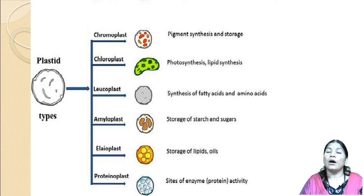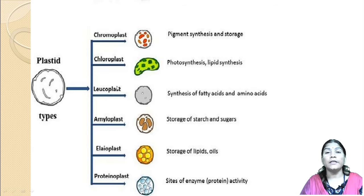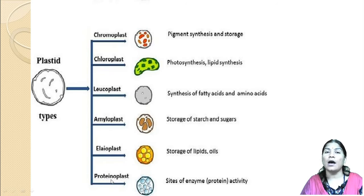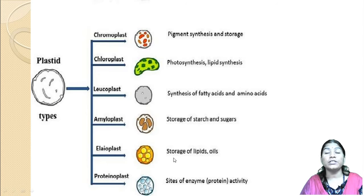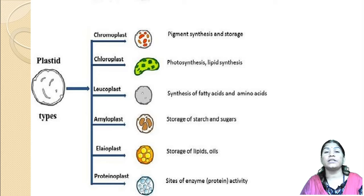Classifying on the basis of whether pigment is present or absent, there are two categories. The first category includes plastids which have different pigments. The second category includes pigment-free plastids — leukoplasts, amyloplasts, elaioplasts, and proteinoplasts. Amyloplasts play an important role in the storage of starch and sugar molecules. Elaioplasts play an important role in storage of lipids and oil. Proteinoplasts play an important role in enzyme activity or protein activity.